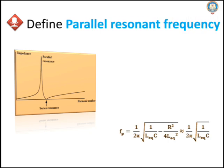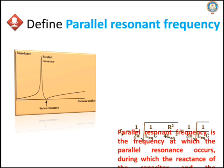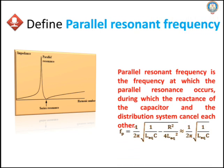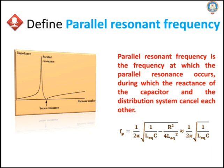Define parallel resonant frequency. The parallel resonant frequency is the frequency at which parallel resonance occurs, during which the reactance of the capacitor and the distribution system cancel each other.